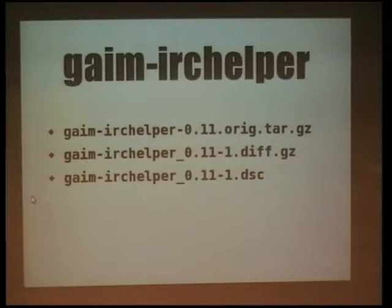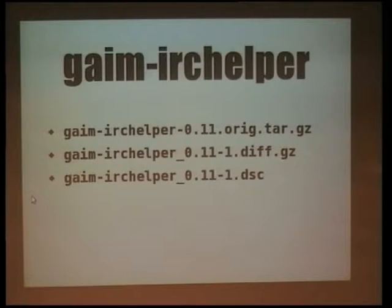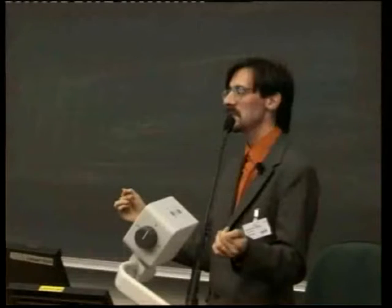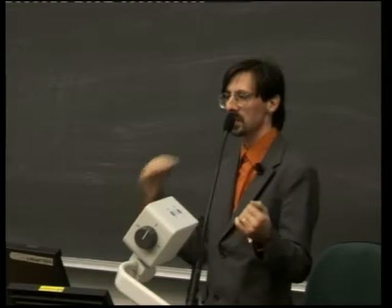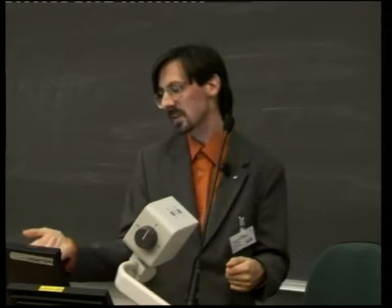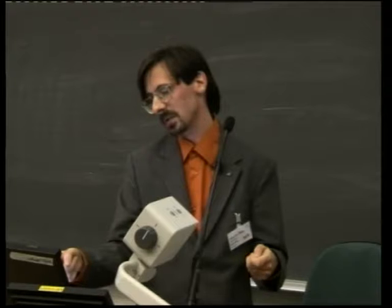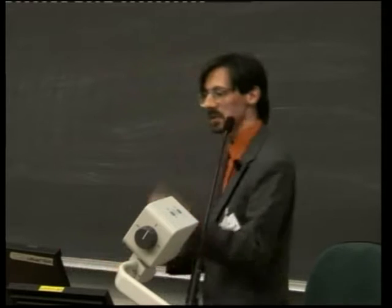The reason why we have this slide here — you notice those three file names. The way Debian works to build packages, contrary to other packaging systems, is always from the perspective of the source package. It doesn't matter what kind of actual applications, libraries, and development files your package will produce. As far as Debian goes, we're treating it as one source package that does something and produces different functionalities. The first thing we have to do is rename the original gaim-irc-helper version 0.11 tarball by adding '.orig', which means this is the original file.